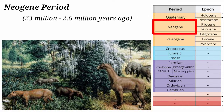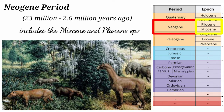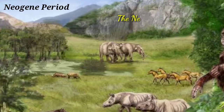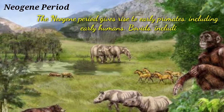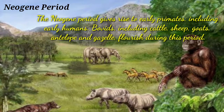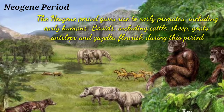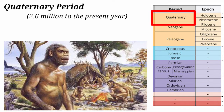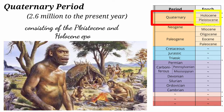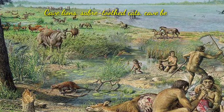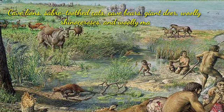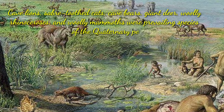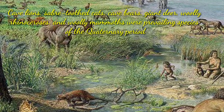Next is the Neogene period, which happened 23 million to 2.6 million years ago. This period includes the Miocene and Pliocene epochs. The Neogene period gives rise to early primates, including early humans. Bovids, including cattle, sheep, goats, antelopes, and gazelle, flourish during this period. Last is the Quaternary period, 2.6 million years ago up to the present. This period consists of Pleistocene and Holocene epochs. In this period, cave lions, saber-toothed cats, cave bears, giant deer, woolly rhinoceroses, and woolly mammoths were the prevailing species.